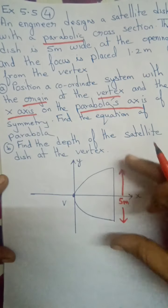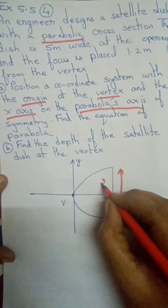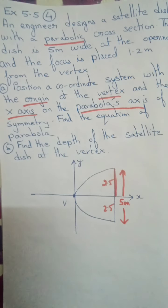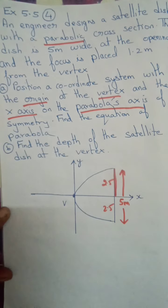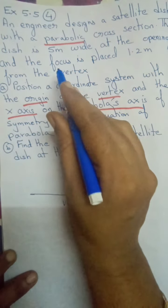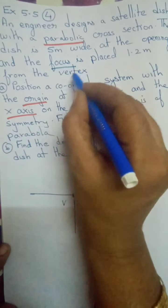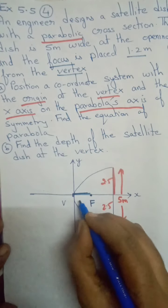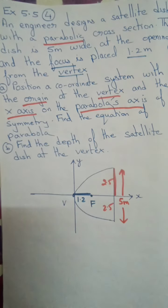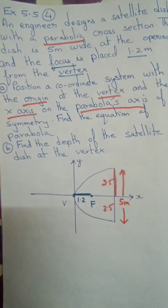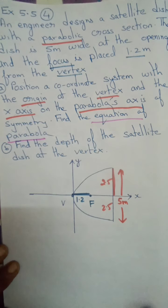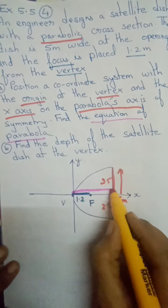The x-axis is the parabolic axis, so from the center the half-width is 2.5 on each side. The focus is placed 1.2 meters from the vertex. There are two parts to the question: the first part is to find the equation of the parabola, and the second part is to find the depth of the dish.